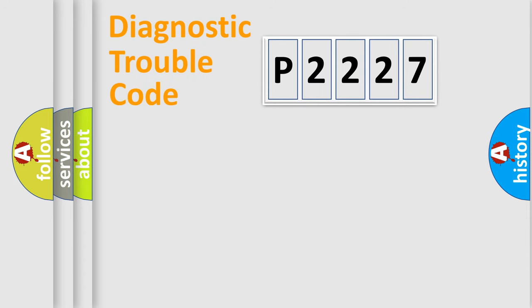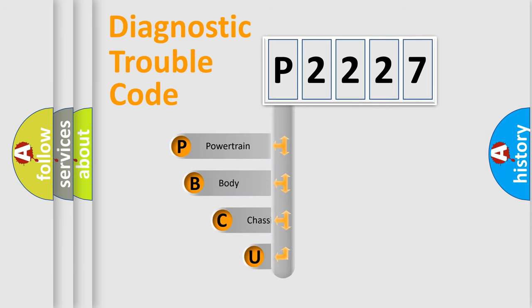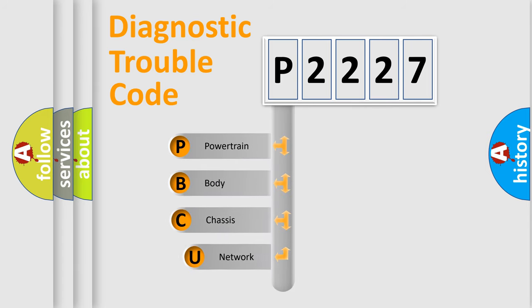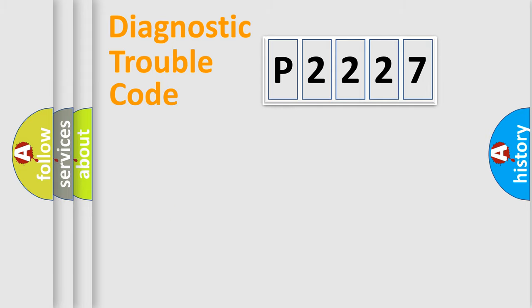Let's do this. First, let's look at the history of diagnostic fault code composition according to the OBD2 protocol, which is unified for all automakers since 2000. We divide the electric system of the automobile into four basic units: Powertrain, Body, Chassis, and Network.